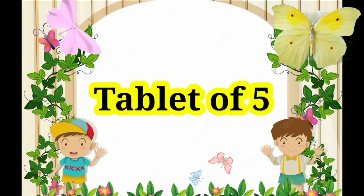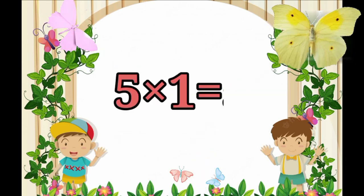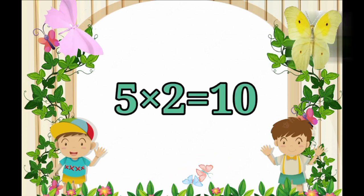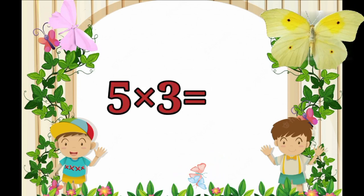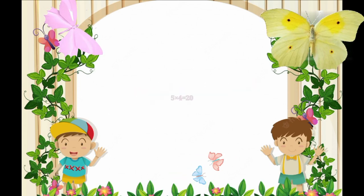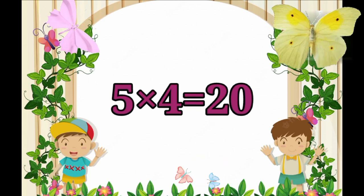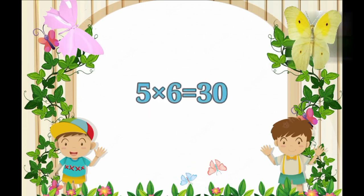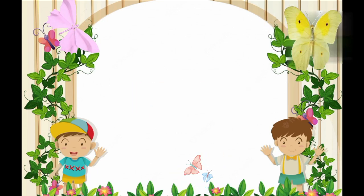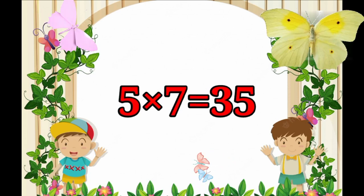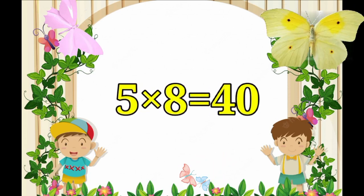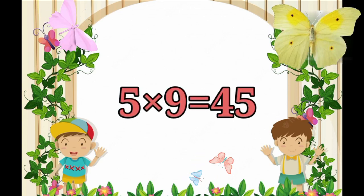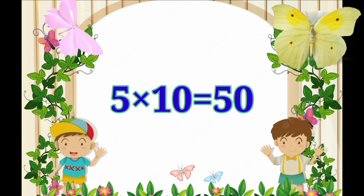Table of 5. 5×1=5, 5×2=10, 5×3=15, 5×4=20, 5×5=25, 5×6=30, 5×7=35, 5×8=40, 5×9=45, 5×10=50.